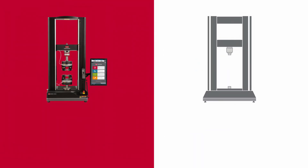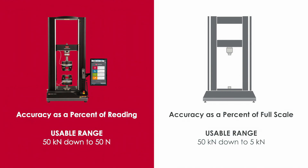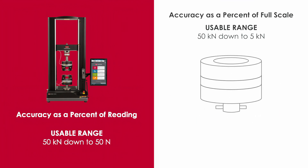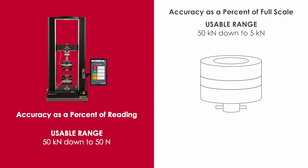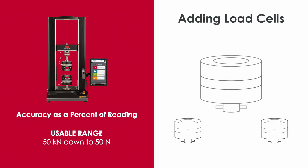To recap, our first setup using accuracy as a percent of reading had a usable range of 50 kilonewtons down to 50 newtons. In our second setup, using accuracy as a percent of full scale, the usable range was 50 kilonewtons down to 5 kilonewtons. As you can see, the usable range of a load cell using accuracy as a percent of full scale is more limited, which means with other suppliers you may need to purchase multiple load cells if you plan to test below 5 kilonewtons. Adding load cells not only increases expenses, it also adds complexity to your lab.